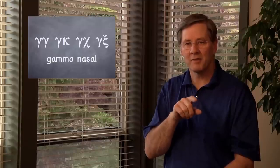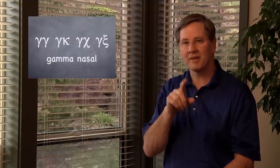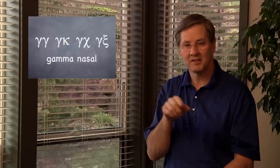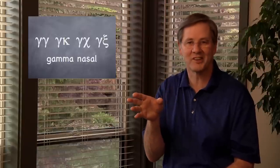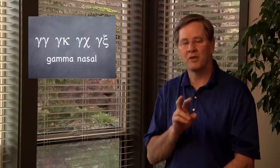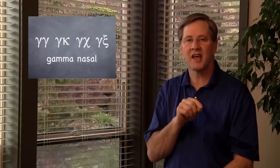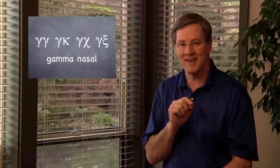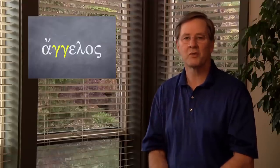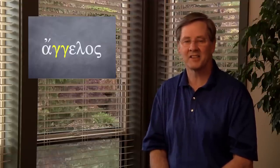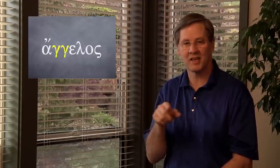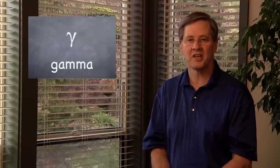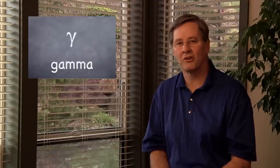There's a special situation: when gamma is followed by another gamma, a kappa, a chi, or xi, the first gamma is pronounced as a gamma nasal — an N sound. For example, the Greek word for angel is 'angelos' (alpha, gamma, gamma), but it's pronounced with an 'ang' sound. So the third letter is the hard G sound, generally, called gamma.